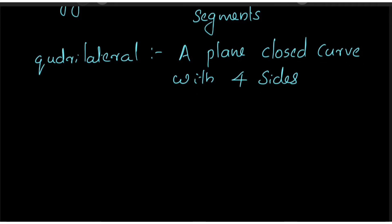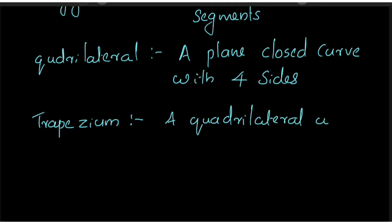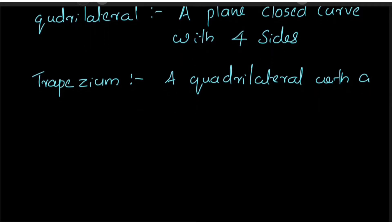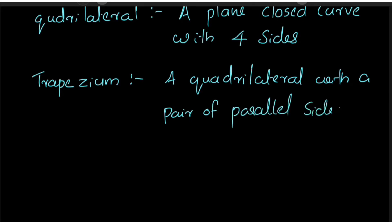If it comes to trapezium, it is also a quadrilateral. What is a trapezium? It is not a rectangle or triangle. That is why it is a trapezium. It is a quadrilateral with a pair of parallel sides — that is, two sides are parallel. The other two sides are not parallel; they go in a different direction.